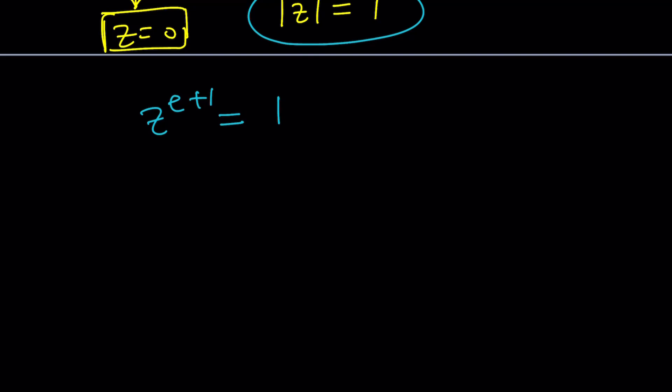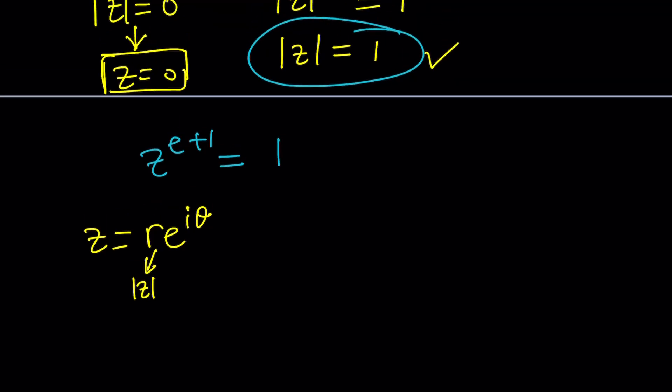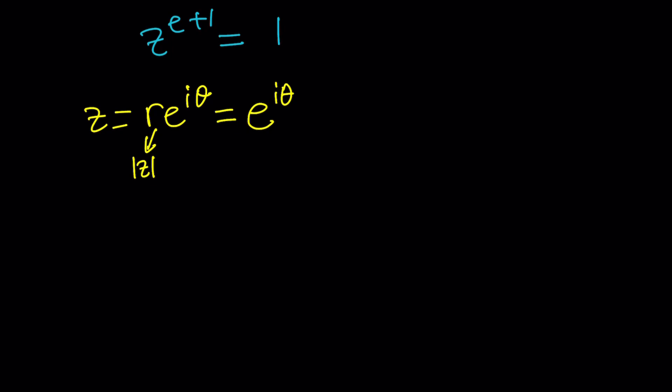So we got two results, and the absolute value of Z equals 1 gives us a lot of good information about Z. Knowing that absolute value of Z is 1 is actually very helpful, because that gives us Z to the power e plus 1 equals 1. Now at this point we can replace Z with the polar form: Z equals R e to the I theta.